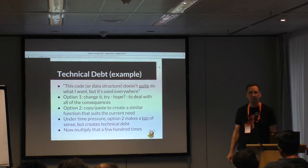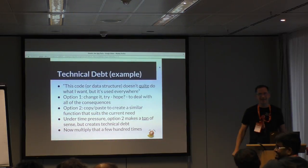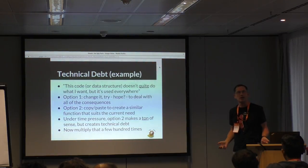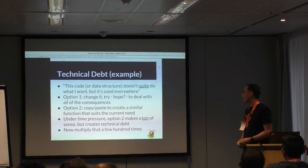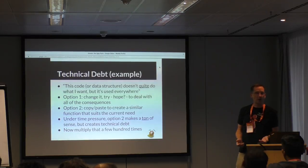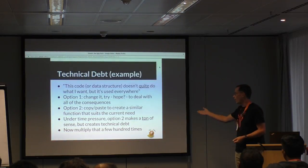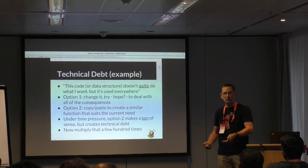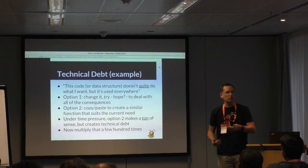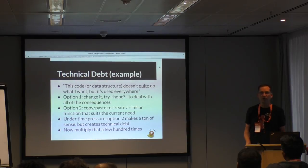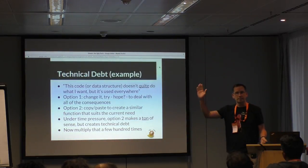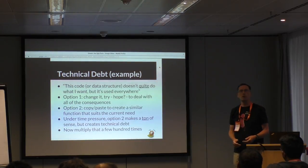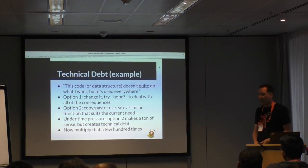I certainly do this same crap all the time myself — I'm not holding myself above anyone. The third option, which I think is probably the most commonly taken, is what I call option two here: you copy the entire function and modify it to do exactly what you need in the current circumstance. It's only called in one place, so you don't need to worry about affecting existing callers in any way whatsoever. We all do it. It's a common, almost universal programmer shortcut. I actually have a slide about shortcuts too.